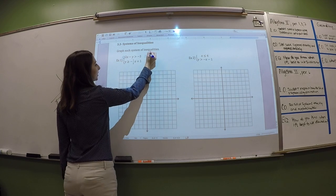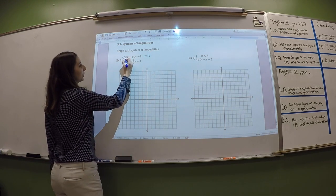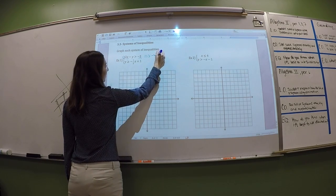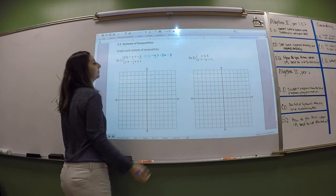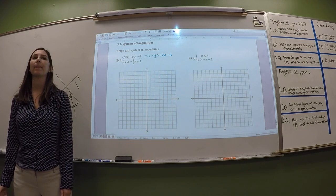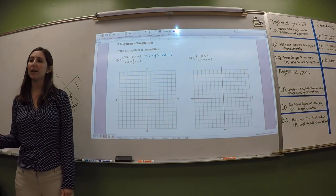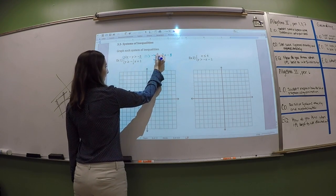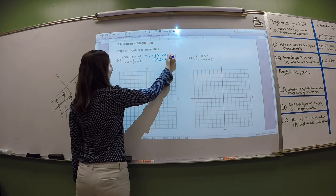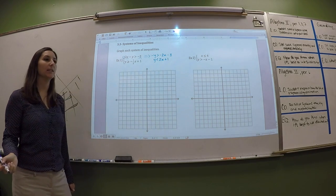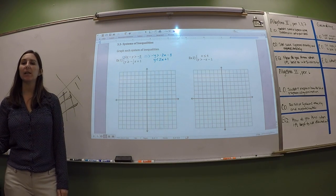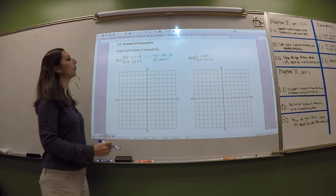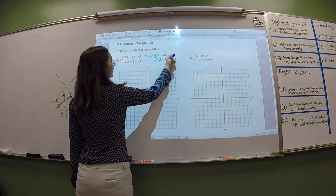To put this in slope-intercept form, the first thing we're going to do is subtract 2x. So I get negative y is greater than negative 2x minus 3. And then I have to divide by a negative 1 to get rid of the negative in front of the y. And then we have to flip the sign. So remember now that we're doing inequalities. If you have to divide by a negative, you have to switch the sign. Oh, I have plus 1. Yes, it is plus 3. Good catch.